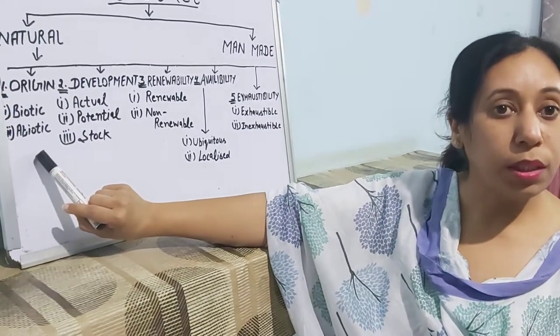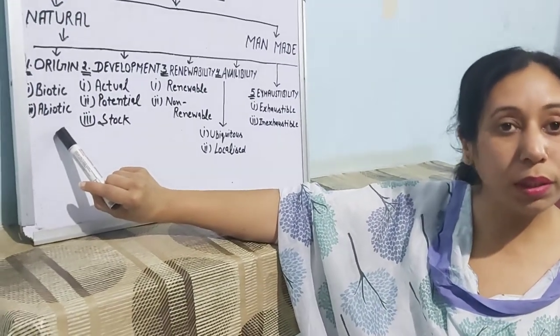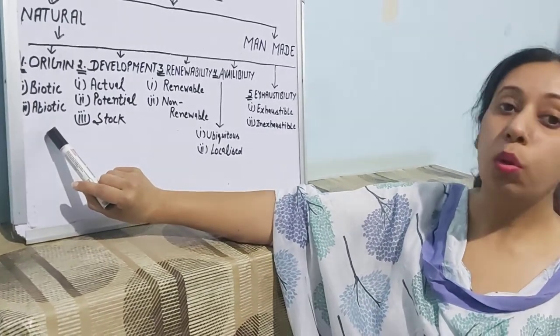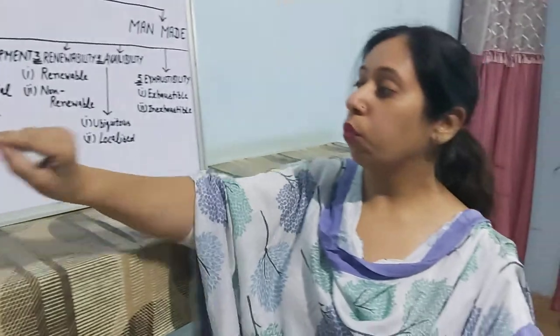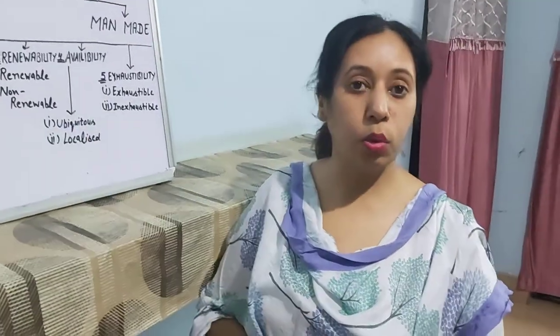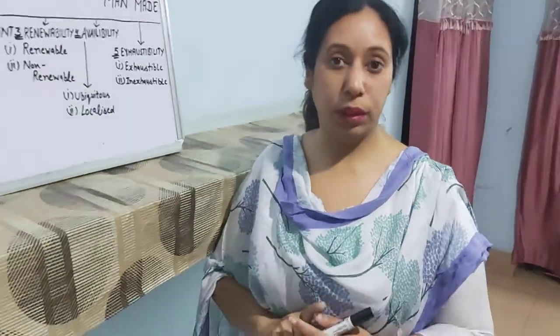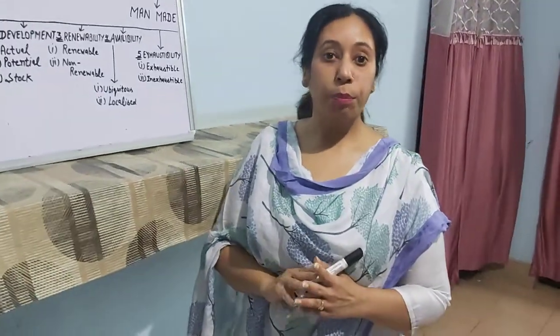The second type is abiotic. Abiotic means non-living things — those resources which are related to non-living things. For example, minerals, air, and sunlight are all related to non-living things.